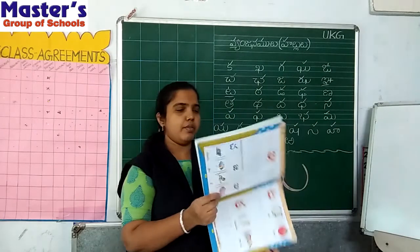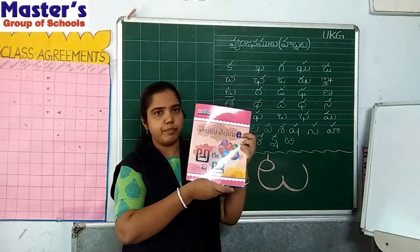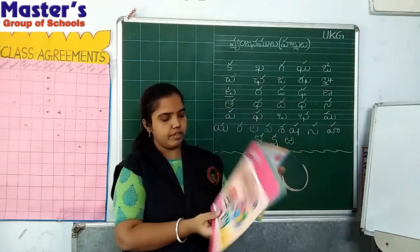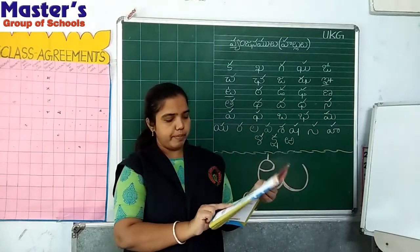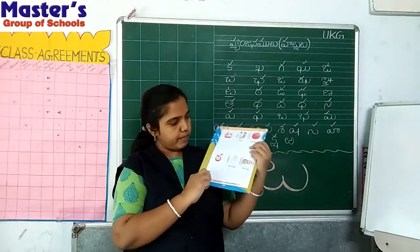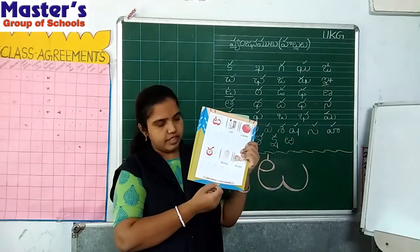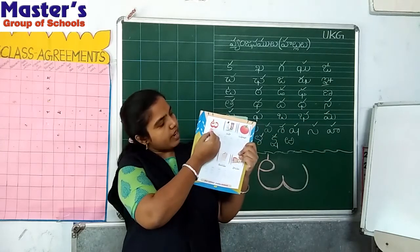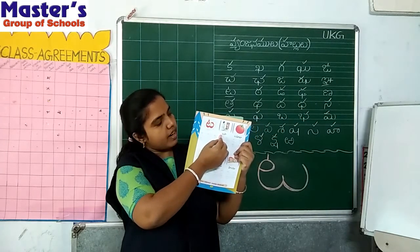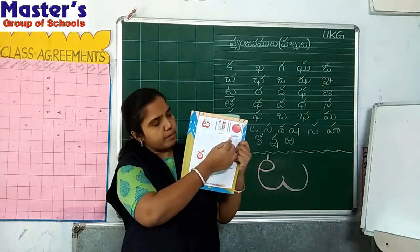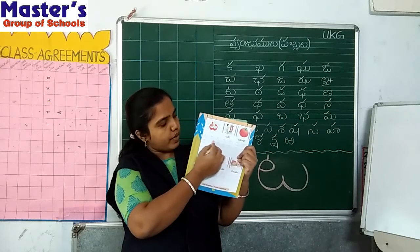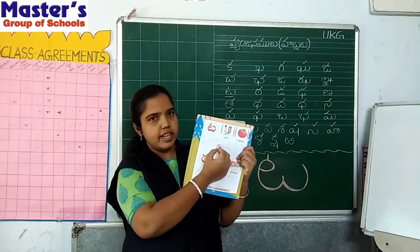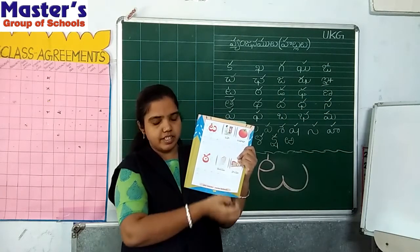Now take your Telugu Velgu Book. Open page number 21. Ta. Ta Pa. Ta Maata. Okay? You have to trace all these Ta letters.